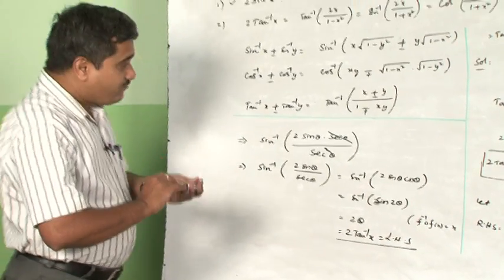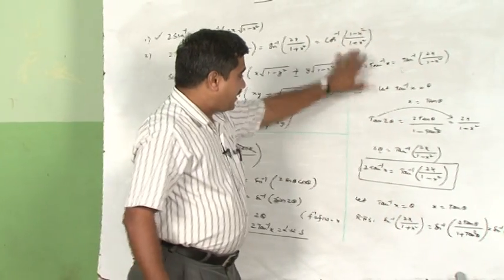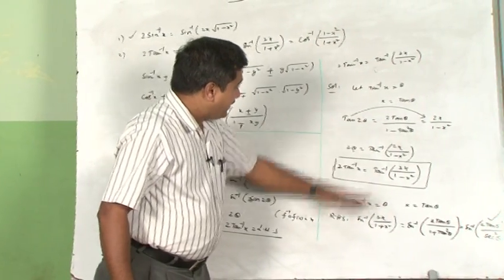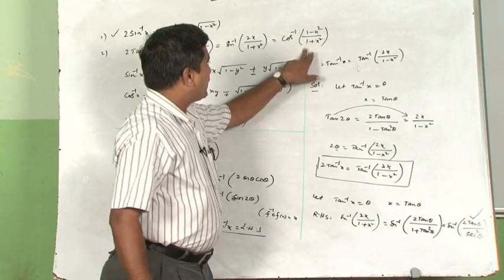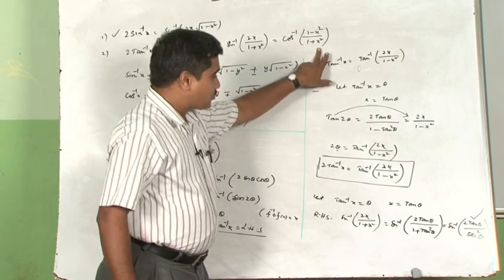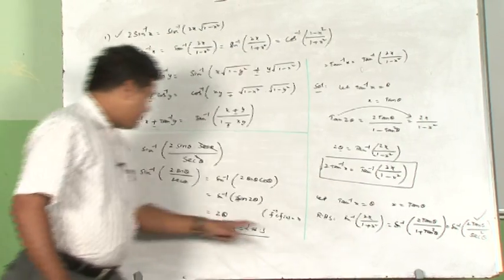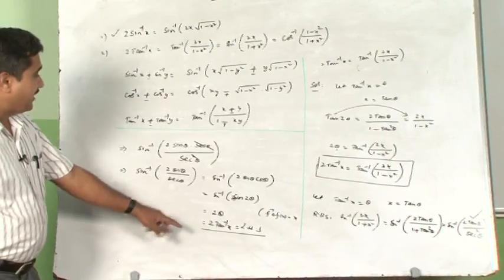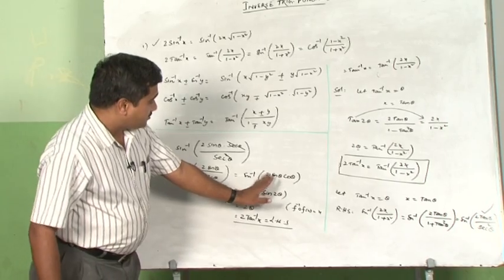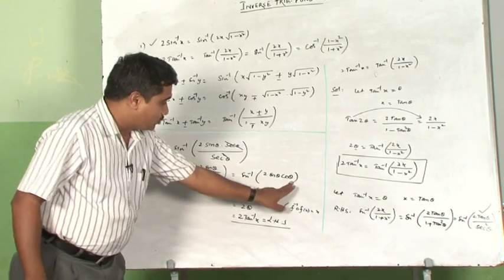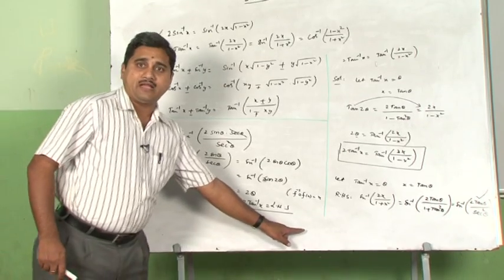Similarly, in the same fashion for the last one: take the right hand side cos inverse(1 minus x square upon 1 plus x square). Put x equals tan theta in this, and you will get the same simplification. Finally, instead of sin 2 theta, you will be getting cos 2 theta, getting cancellation, and 2 tan inverse will be arrived at.